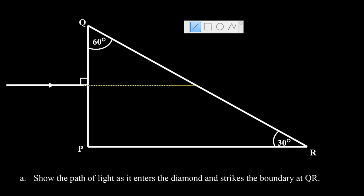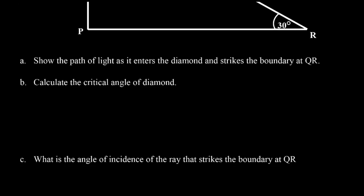The ray enters and continues until it strikes the boundary at QR — it's going to strike QR like that. That's part A. Now part B says we have to calculate the critical angle of diamond.